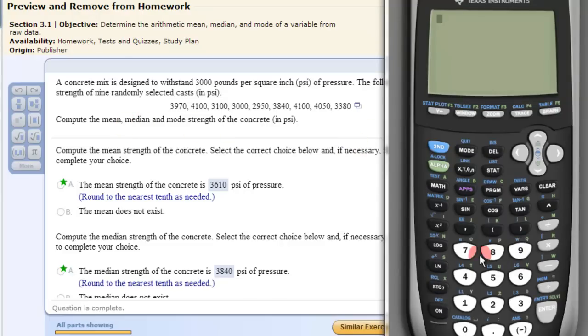So we go to our calculator, we turn it on, and then we go into STAT and EDIT, because we're going to edit the list. We put all of this information into list one. If you have some information already in there, like I do over here now on list two, go to the top, click clear, and enter, and it will be gone.